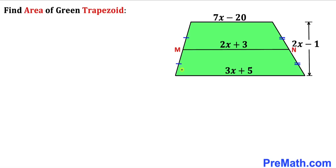Welcome to pre-math. In this video we have a green trapezoid whose bases are represented by 7x minus 20 and 3x plus 5, its median is represented by 2x plus 3, and its height is represented by 2x minus 1. We are going to find the area of this green trapezoid.